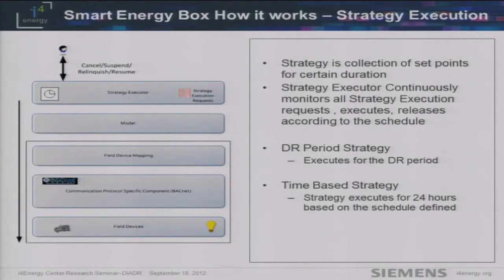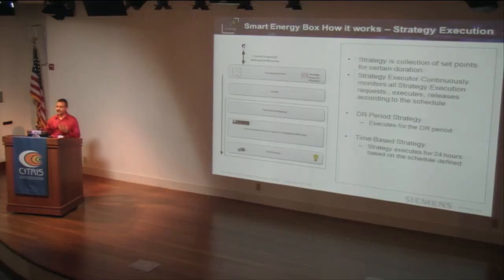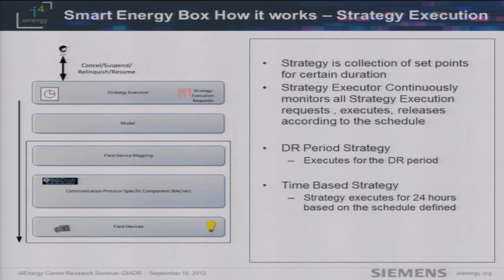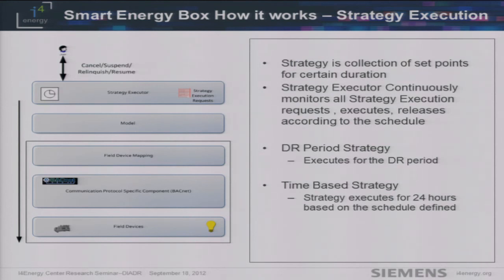The strategy executor continuously monitors the current time and executes onto the building. The way we model the building information is protocol-agnostic — we define the model and map it to building control points according to the protocol. For example, thermostat room 64 is mapped to a BACnet point with corresponding information. If you want to adapt to a different protocol, you don't need to change any components inside the box — you just map to a new data point and write the new adapter. For a SOAP point, map thermostat 64 to the SOAP point, write the SOAP adapter into the Smart Energy Box, and it works automatically.